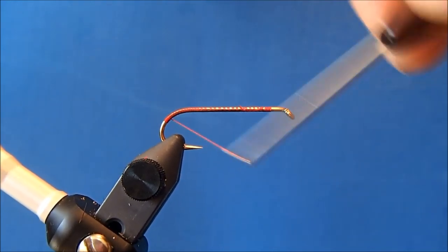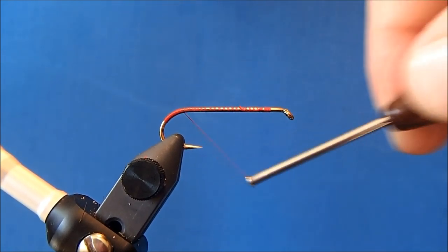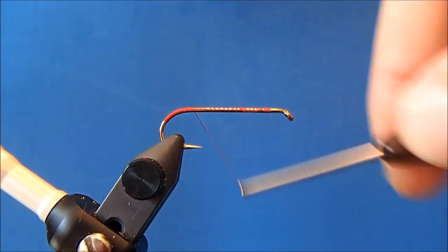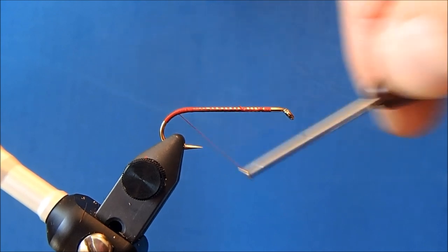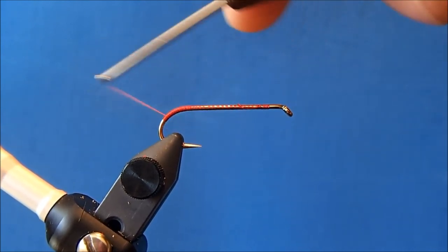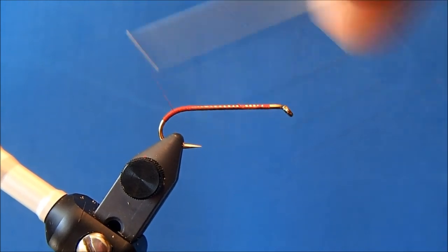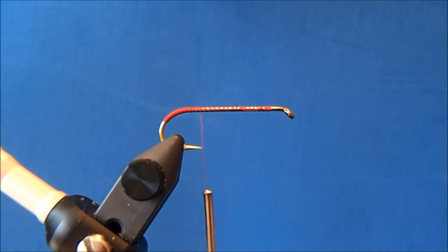So I'm just bringing my thread down to the bend in the hook and all I'm doing here is tying in a little tag and I'll maybe go over it twice just to make sure I've covered it all and then I'll leave my thread maybe at the point in the hook.